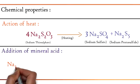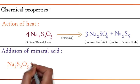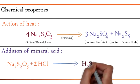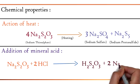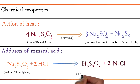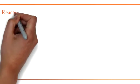Next, addition of mineral acid. Na2S2O3 + 2HCl → H2S2O3 + 2NaCl. Sodium thiosulfate on reacting with hydrochloric acid produces thiosulfuric acid and sodium chloride.